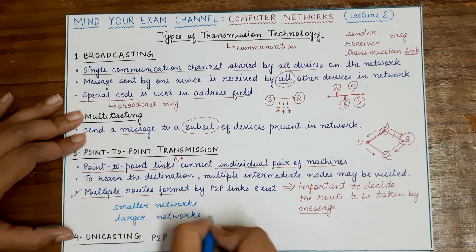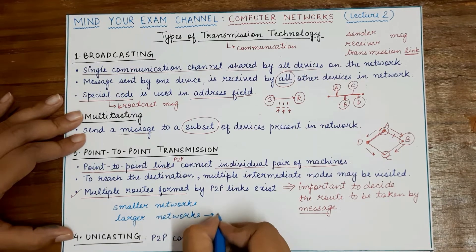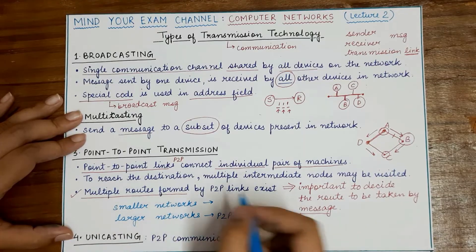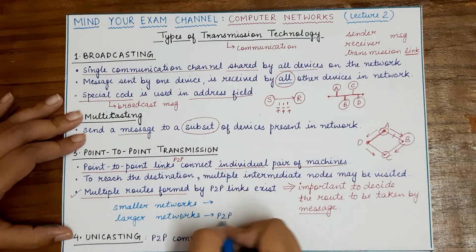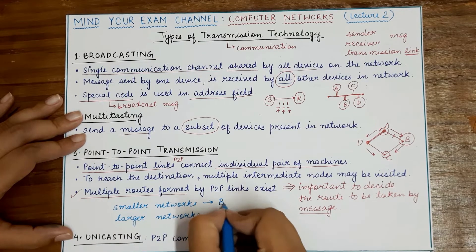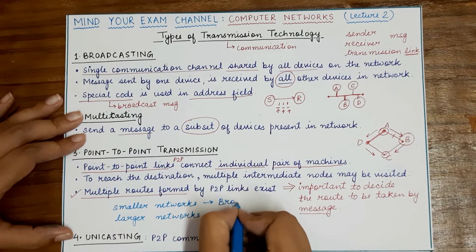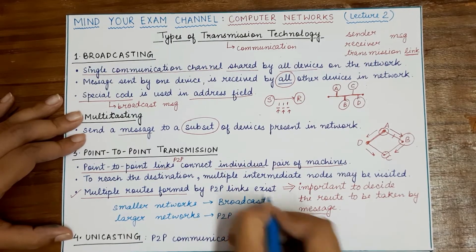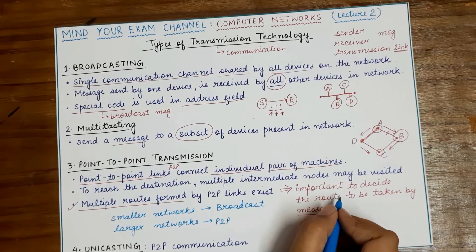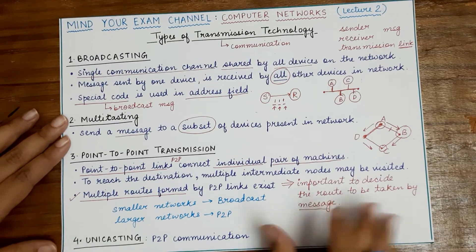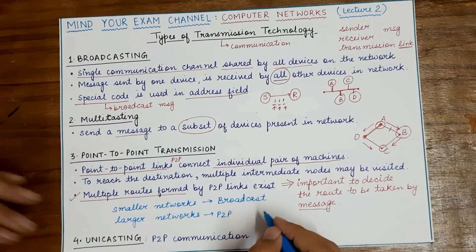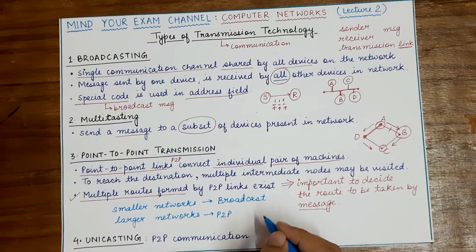These are two ways in which communication can take place. Smaller networks can also use point-to-point, but it is easier to broadcast a message over a smaller network, and it is better to have point-to-point communication for larger networks. It is not a rule, but this is a general convention.